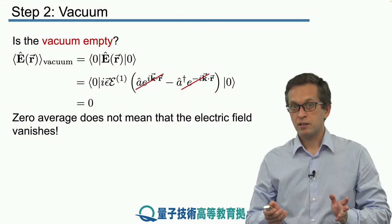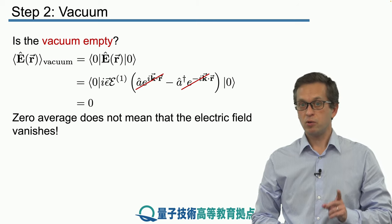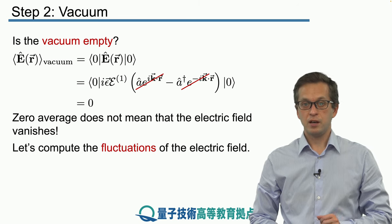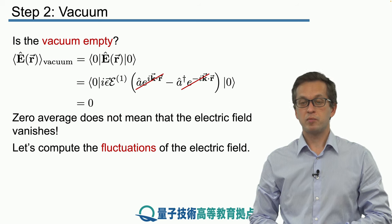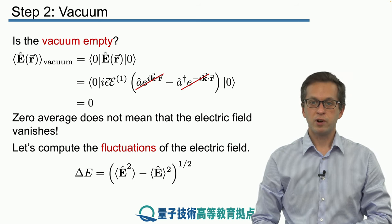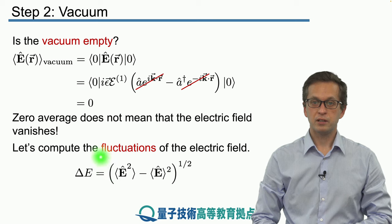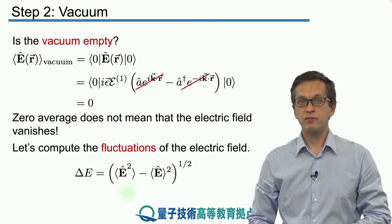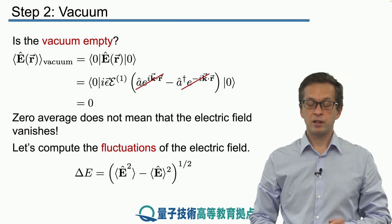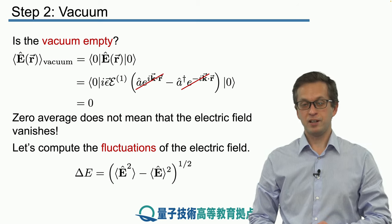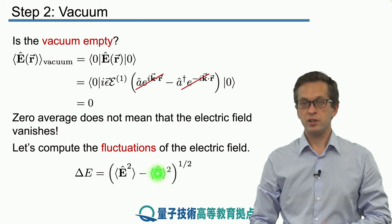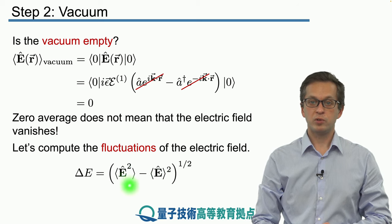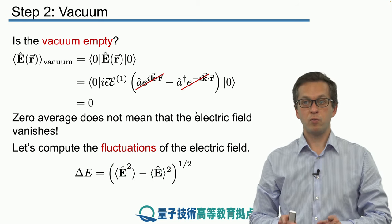So does that mean that the field is zero? No, only its average, meaning there could still be fluctuations, so we have to check that. And the fluctuations, as we have seen before, are given by the standard deviation of E. We write that the fluctuations delta E are equal to the square root of the average of E squared minus the square of the average E. And we have just computed this average of E - this is just zero. So in order to get the fluctuations, all we have to do is compute the average of E squared when the field is in vacuum.